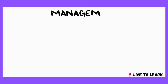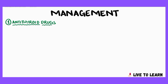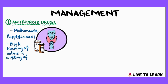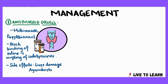For treating Graves' disease, antithyroid drugs such as methimazole or propylthiouracil are considered the first-line treatment. These drugs block the binding of iodine and coupling of iodotyrosines. Important side effects include liver damage and agranulocytosis.